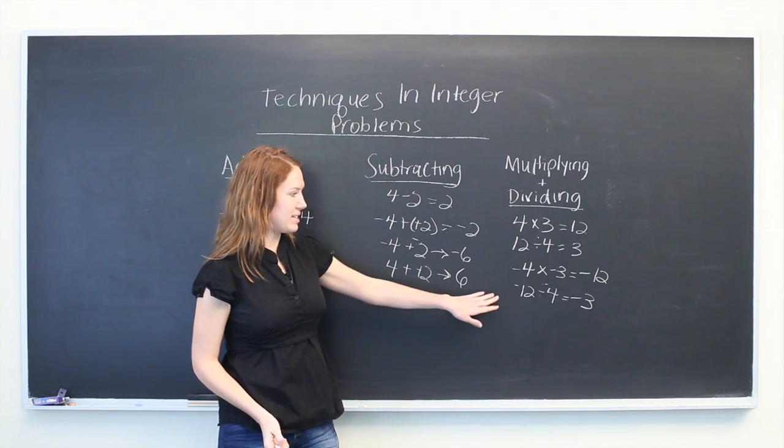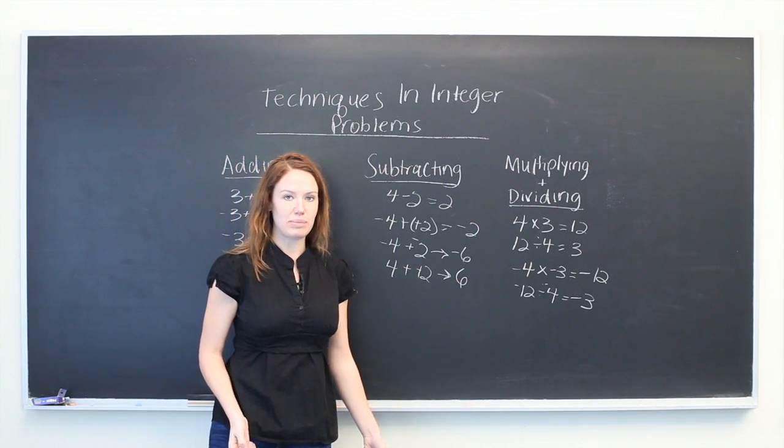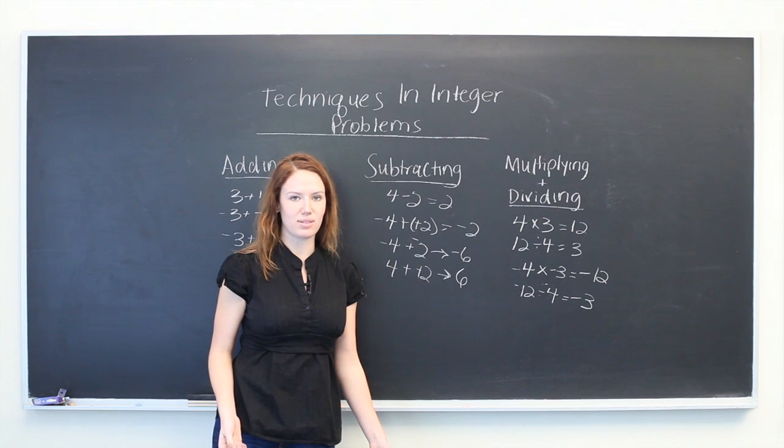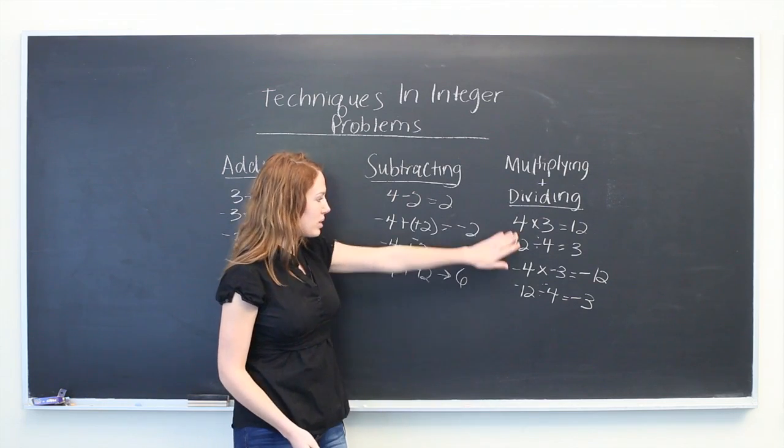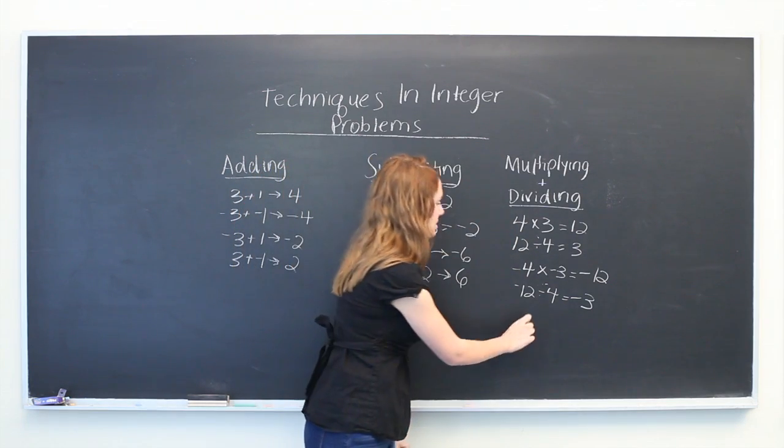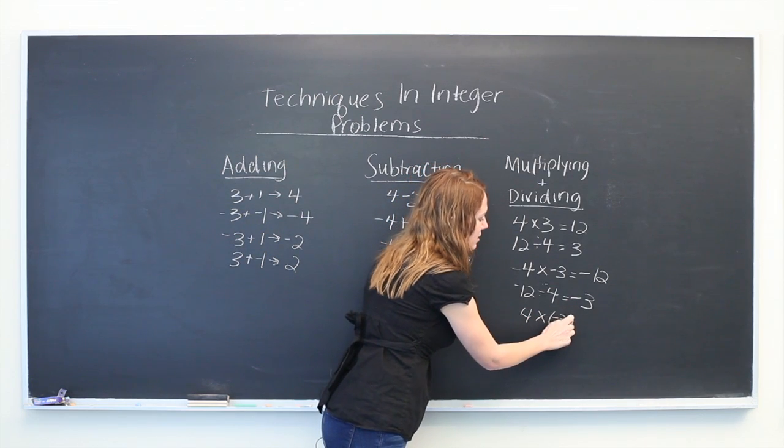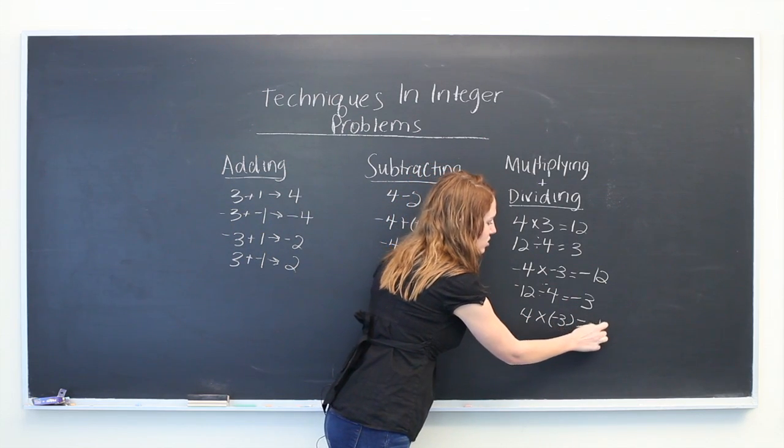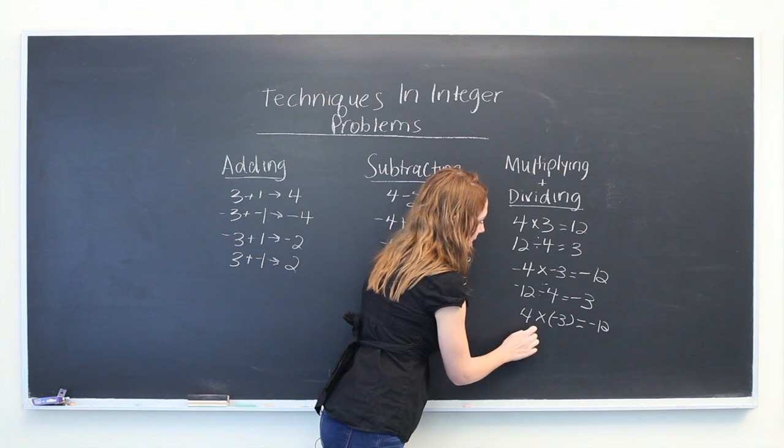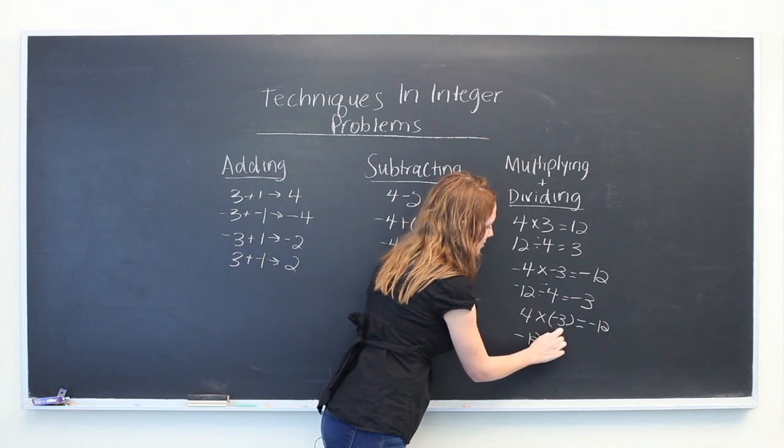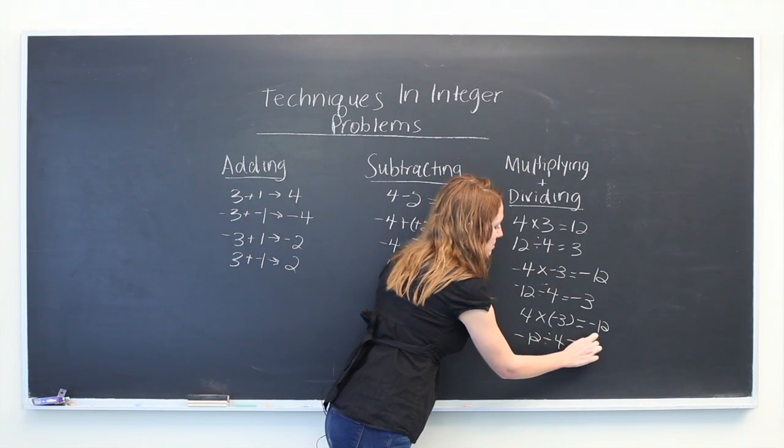Now, if the signs are different, that just means that your answer is going to have a negative sign, but you can treat them as this first case once you sort the signs. So 4 times minus 3 will be minus 12, or minus 12 divided by 4 will be minus 3.